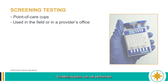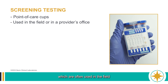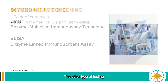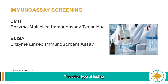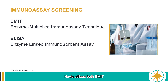Screening tests can be performed via point-of-care cups, which are often used in the field or in a provider's office. The other type of testing would be immunoassay-based testing performed in the laboratory. Navis utilizes both EMIT and ELISA-based methods for initial testing.